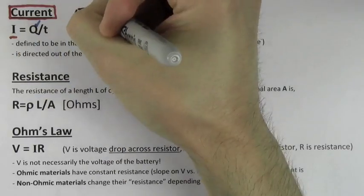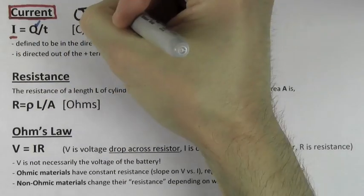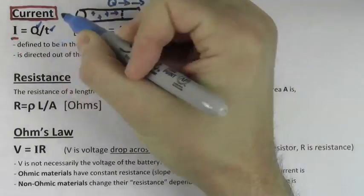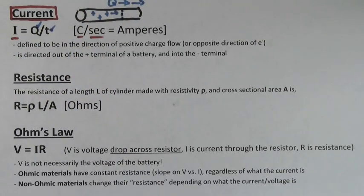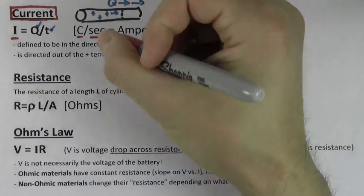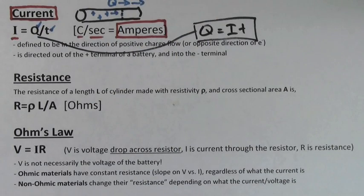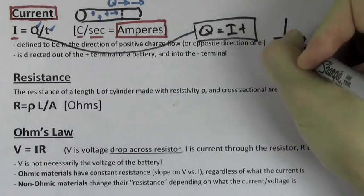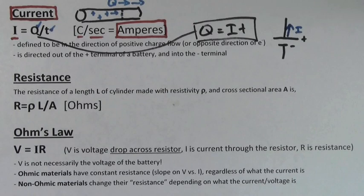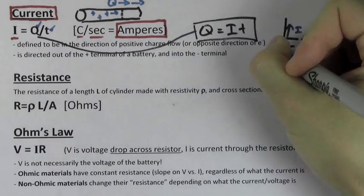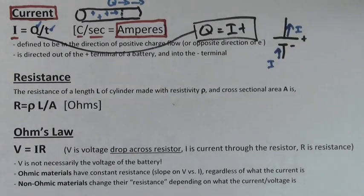Current is the amount of charge per time that passes a certain point in a wire. It's measured in coulombs per second, which we call an ampere. You often have to rearrange this formula to solve for the amount of charge that passes in a certain amount of time. Remember that batteries pump current out of the positive terminal and it flows into the negative terminal.